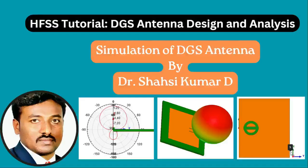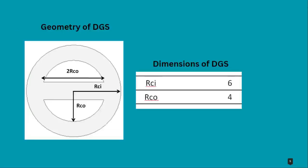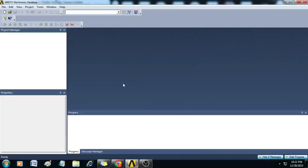Let us first understand the dimensions of the radiating patch. It has length of the patch as LP, width of the patch as WP, the ground width is WG, and ground length is LG — that holds good for the substrate as well. We have LF as the length of the feed, WF as the width of the feed, Y0 as the inset length, and YW as the gap between the patch and the feed. The calculated dimensions are mentioned in this table. For the defective ground structure geometry, two times RC0 is the length of the rectangular strip, RCI is the radius of the outer circle, and RCO is the radius of the inner circle.